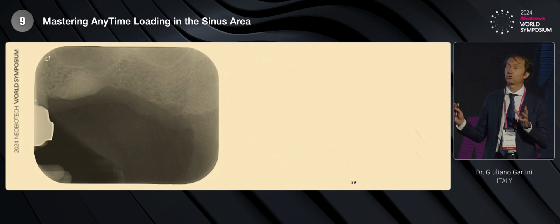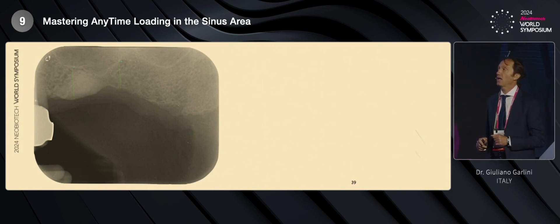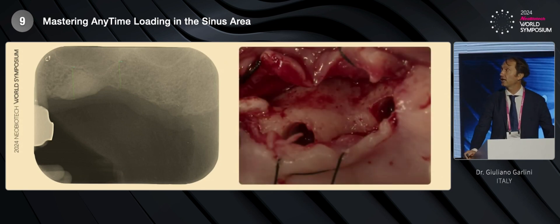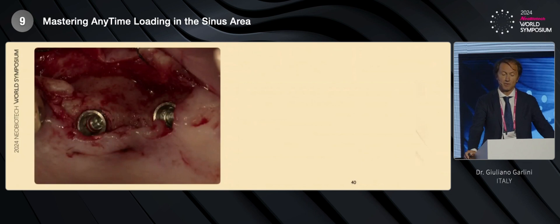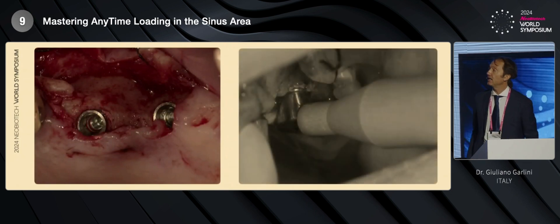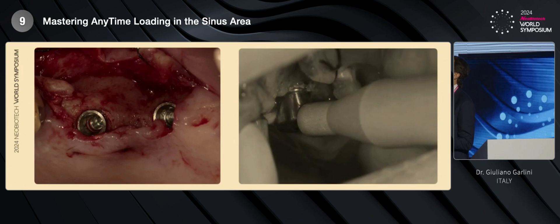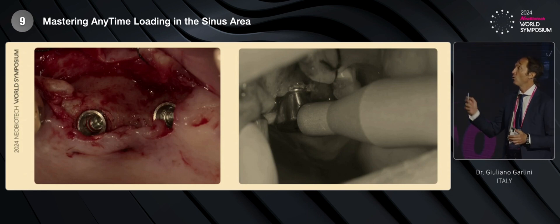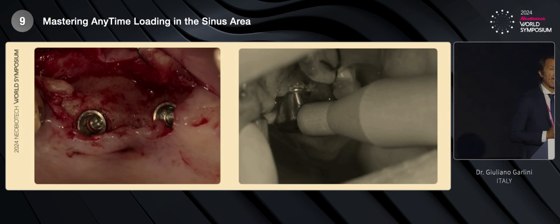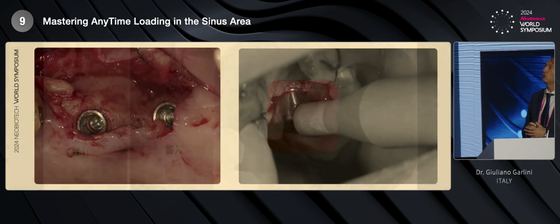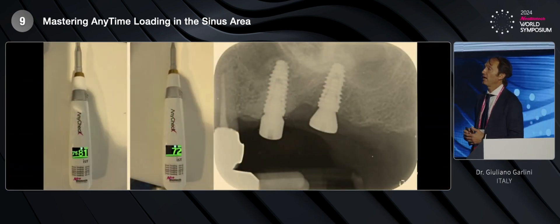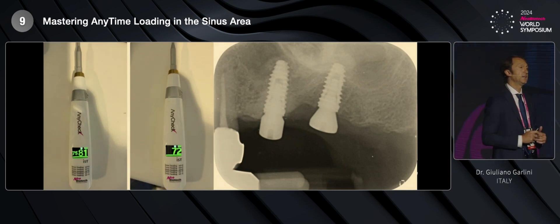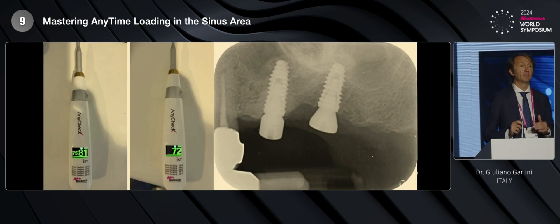Let me show you one clinical case. We need to insert two implants in the molar area. We have more or less four to five millimeters of residual height of bone. So, this is the surgery — the implant inserted — and the healing screw inserted over the implant. We have to decide: we can leave the healing screw or we have to submerge. I used AnyCheck, and the AnyCheck mean value was between 70 and 72, so it was good for this clinical case to insert, without any problem, the healing screw.